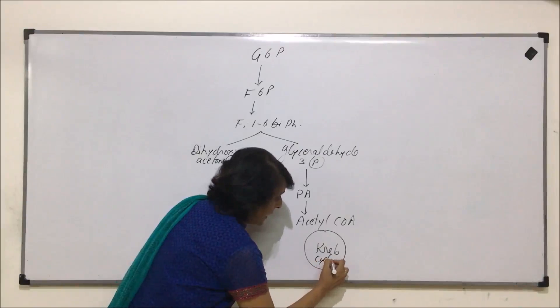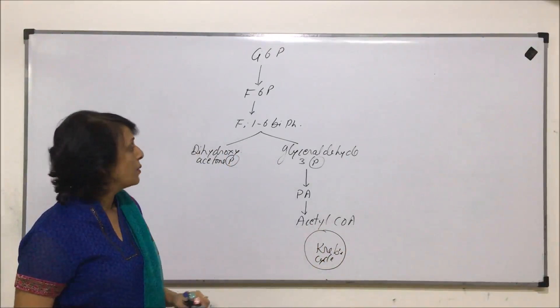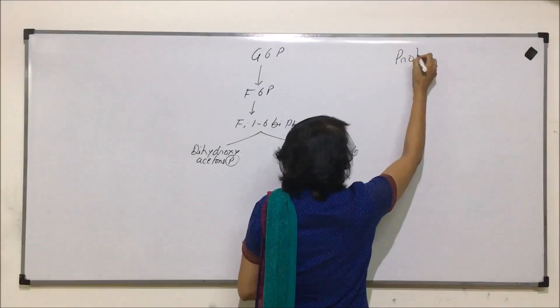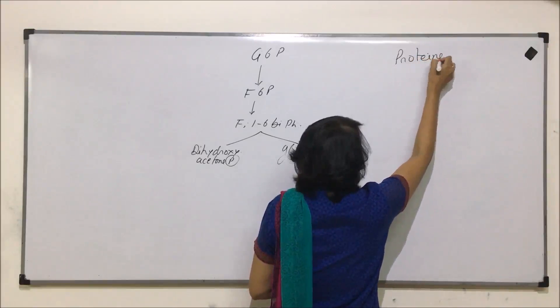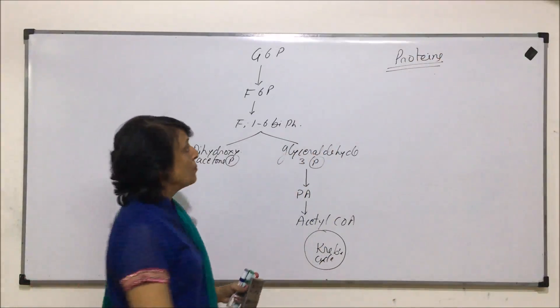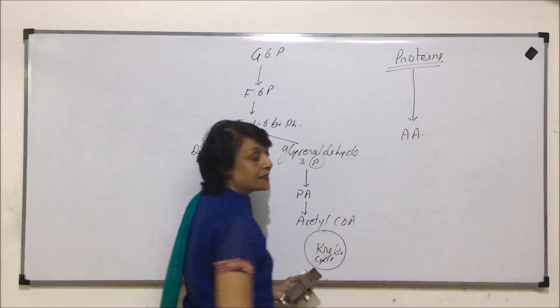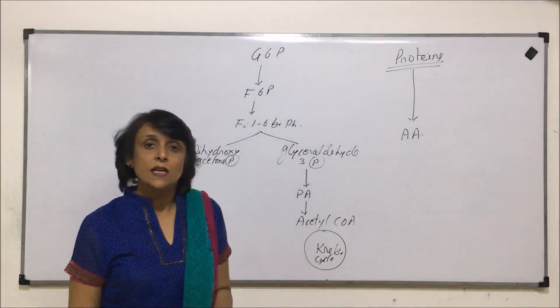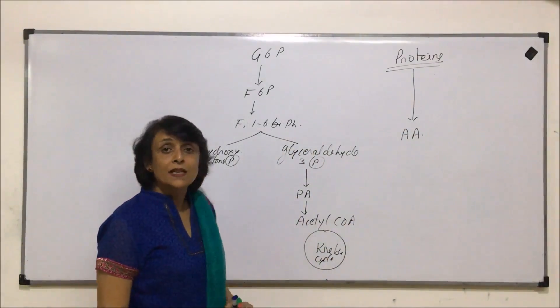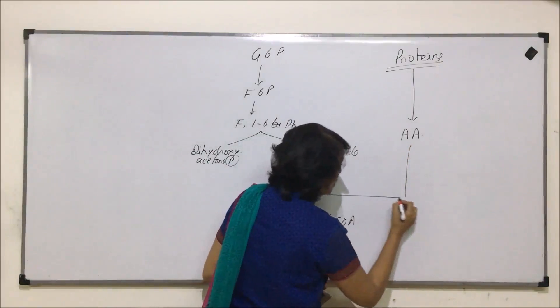This is the part which we have done in detail, but we started with glucose. That means this is how the carbohydrates are broken down and we get the energy. This is finally Krebs cycle and then energy liberation. Two more substrates, the other substrates. Proteins - what happens if proteins have to give us energy? Proteins dissociate to give us amino acids.